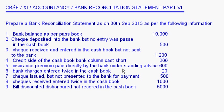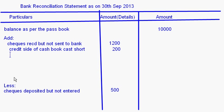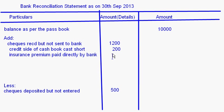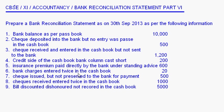Fourth: insurance premium paid directly by the bank under the standing advice. When the bank pays the insurance premium directly, the bank balance decreases whereas the cash book balance is still more. So this should be added. Insurance premium paid directly by the bank: 600 rupees.